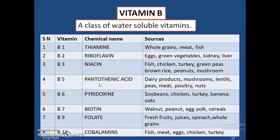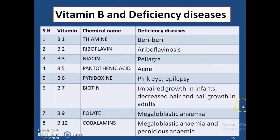Vitamin B5 is known as pantothenic acid. Vitamin B6 is known as pyridoxine, found in soybeans, chicken, turkey, banana, and oats. Vitamin B7 is known as biotin, found in walnuts, peanuts, egg yolk, and cereals. Vitamin B9 is known as folate, found in fresh fruits, juices, spinach, and whole grains. Vitamin B12 is known as cobalamin, found in fish, meat, eggs, chicken, and turkey.